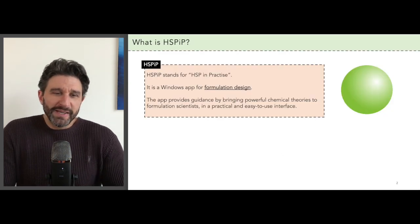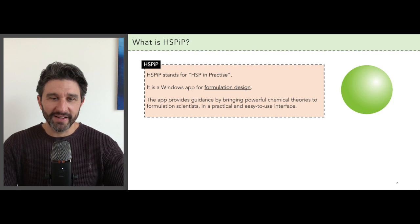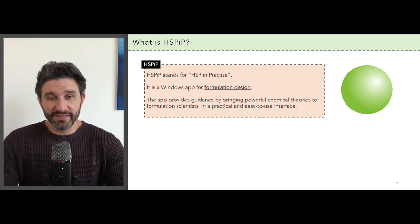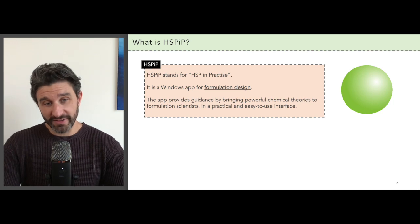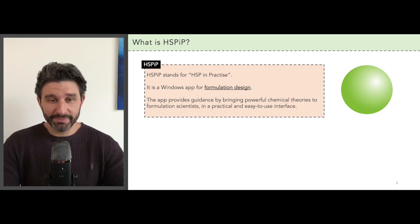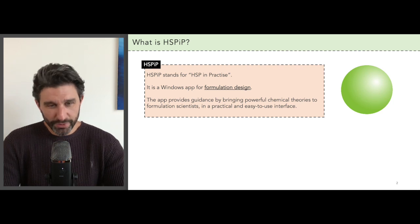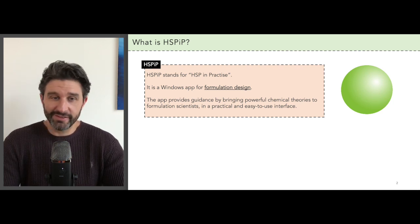So what is HSP-IP? HSP-IP stands for Hansen Solubility in Practice. It's an intuitive Windows app for formulation design, and the app provides guidance by bringing powerful chemical theories to formulation scientists in a practical and easy to use interface.